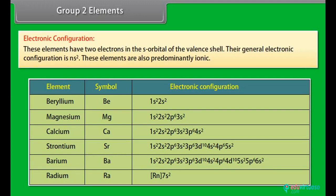Group 2 elements: Electronic configuration. These elements have two electrons in the s-orbital of the valence shell. Their general electronic configuration is ns2. These elements are also predominantly ionic.